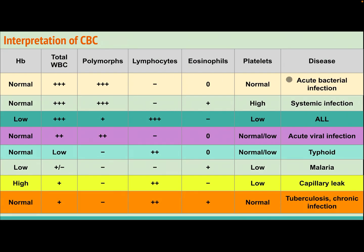Interpretation of complete blood count: In acute bacterial infection, there is an increase in total white blood cell count, especially polymorphs. In systemic infection, total white blood cell count, polymorphs, and platelets are elevated. In leukemia, there is low hemoglobin, elevated total white blood cell count with lymphocytes, and low platelets. Acute viral infection shows nothing specific, with mild elevation in white blood cells and polymorphs. Typhoid presents with decreased total white blood cell count. Malaria shows low hemoglobin and low platelets. Tuberculosis and chronic infections show mild elevation in white blood cells and lymphocytes.